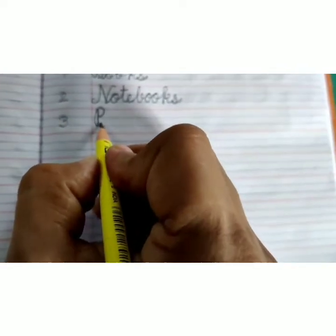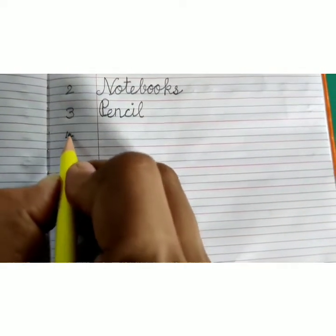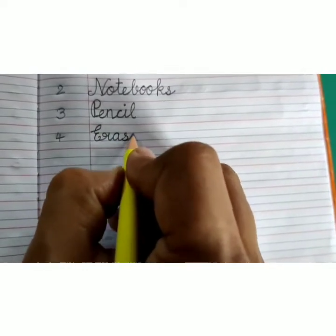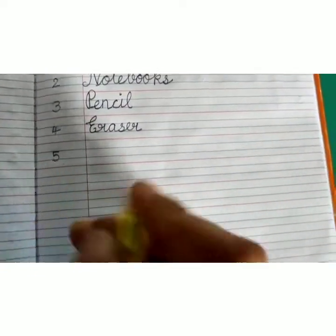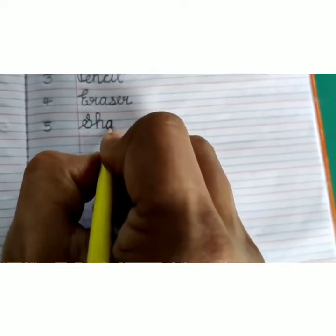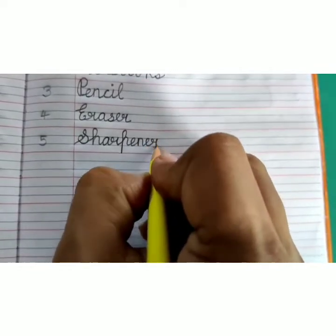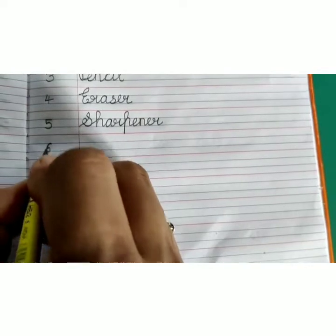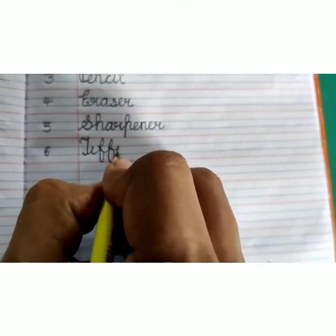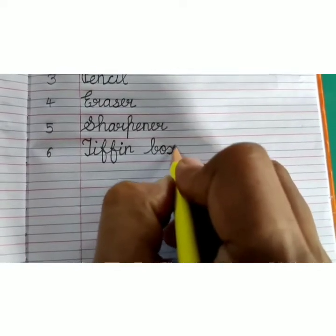P-E-N-C-I-L, Pencil. Number 4: E-R-A-S-E-R, Eraser. Number 5: S-H-A-R-P-E-N-E-R, Sharpener. Number 6: T-I-F-F-I-N one finger space B-O-X, Tiffin Box.